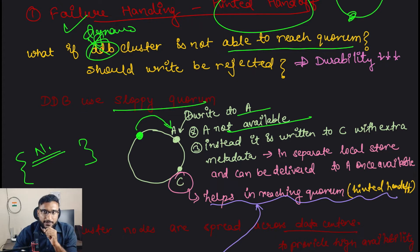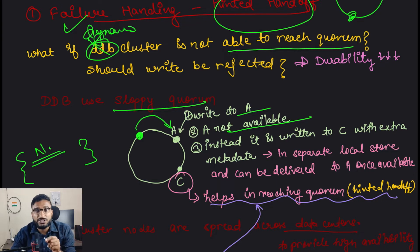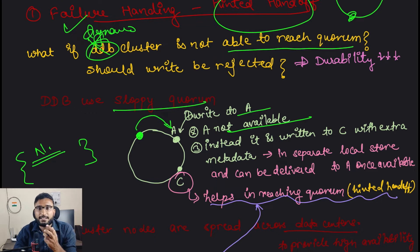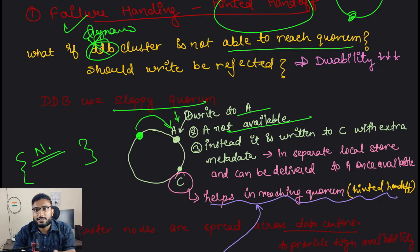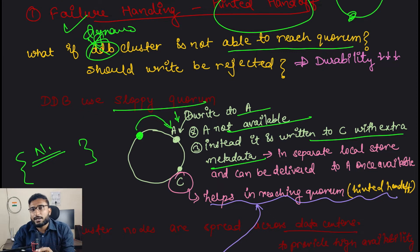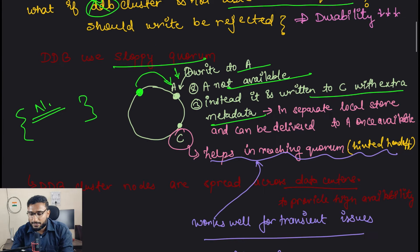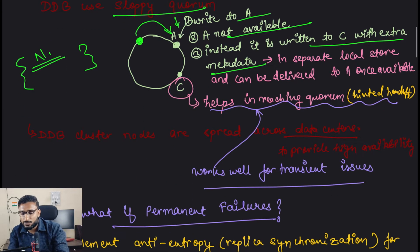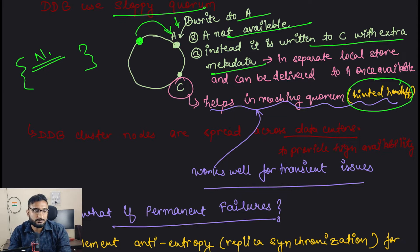You have N nodes in your preference list and you prefer to write to the top N nodes. But if from those top N nodes you cannot reach the quorum value, you will write the data to nodes which are lower in priority - at least the data is being written. Then when Node A comes back, you transfer that data from Node C to Node A. Instead of writing to A, it is written to C with some extra metadata so you can figure out that this data belongs to A and needs to be sent to A later.